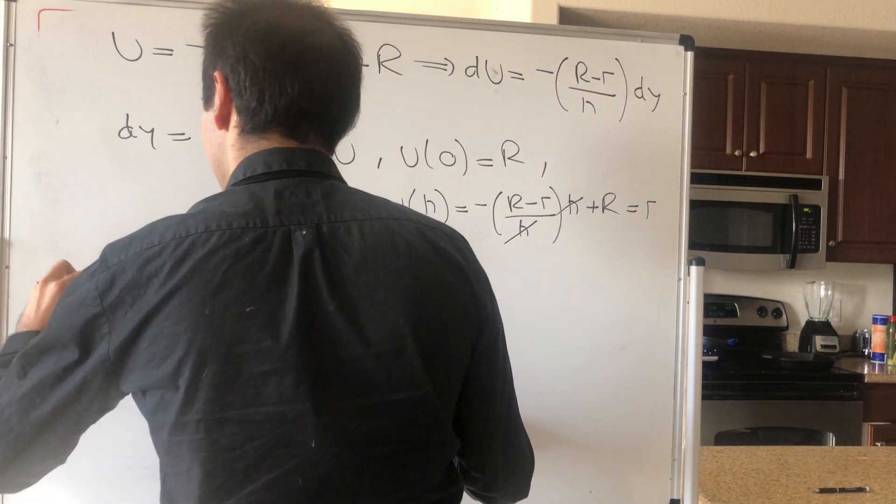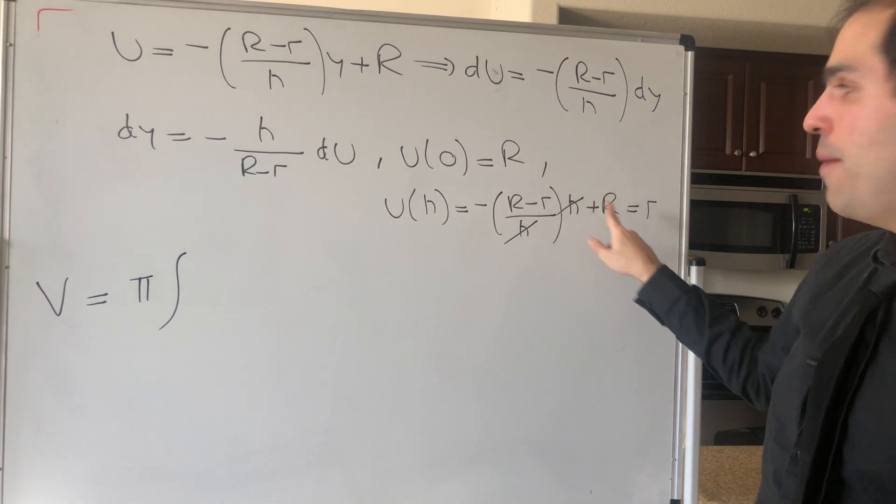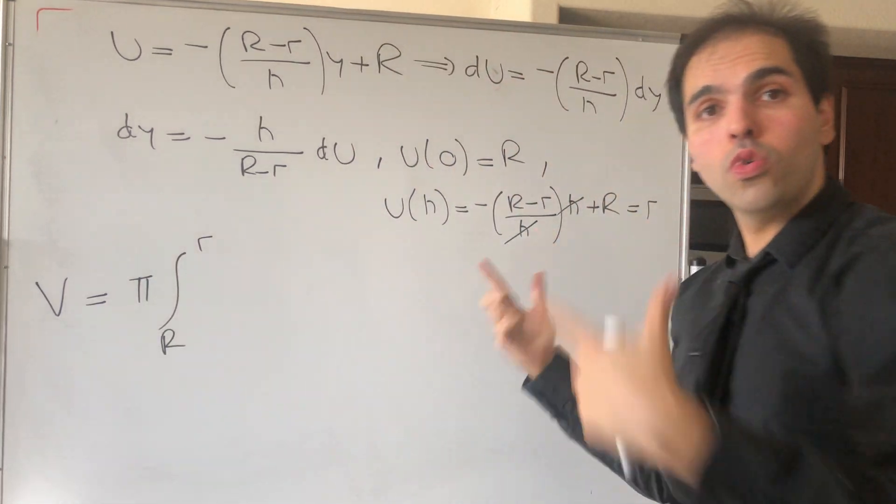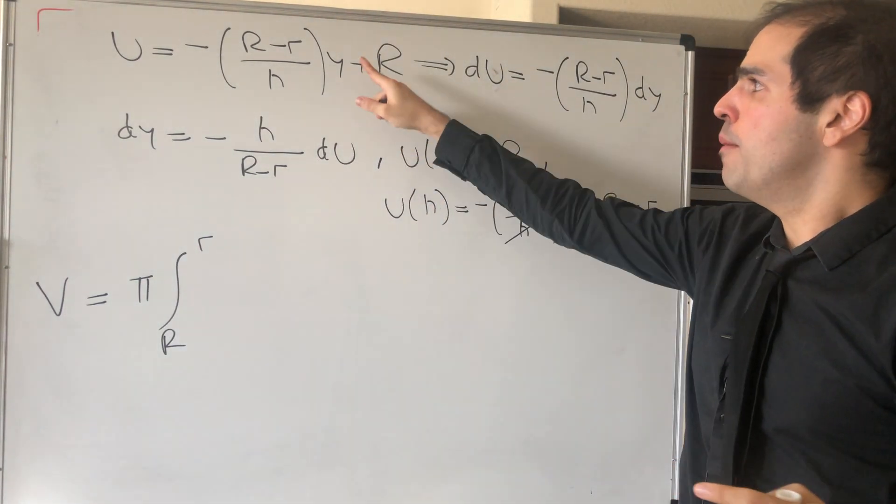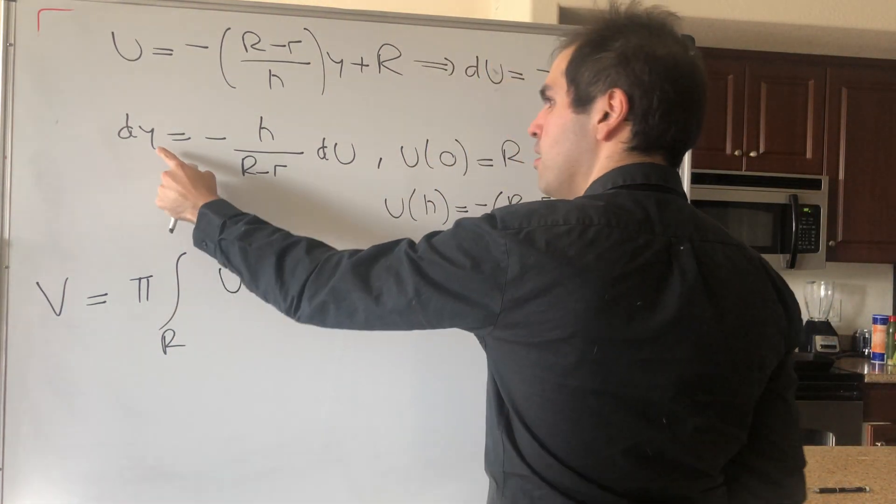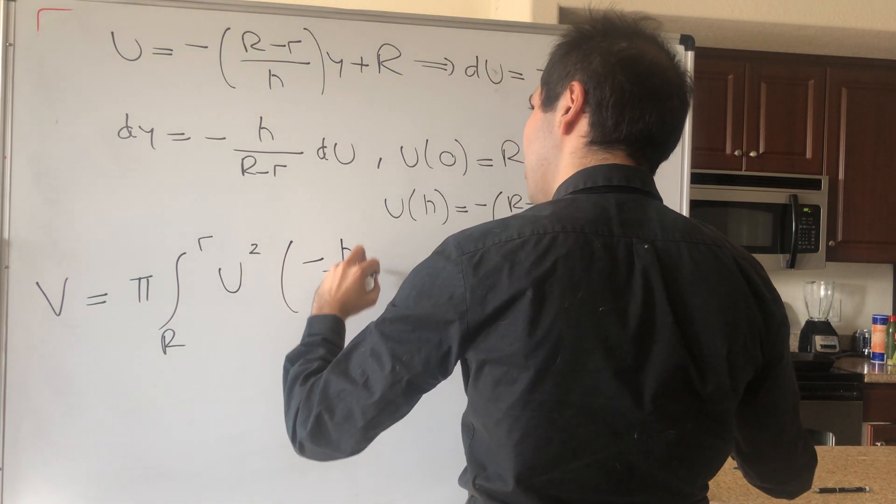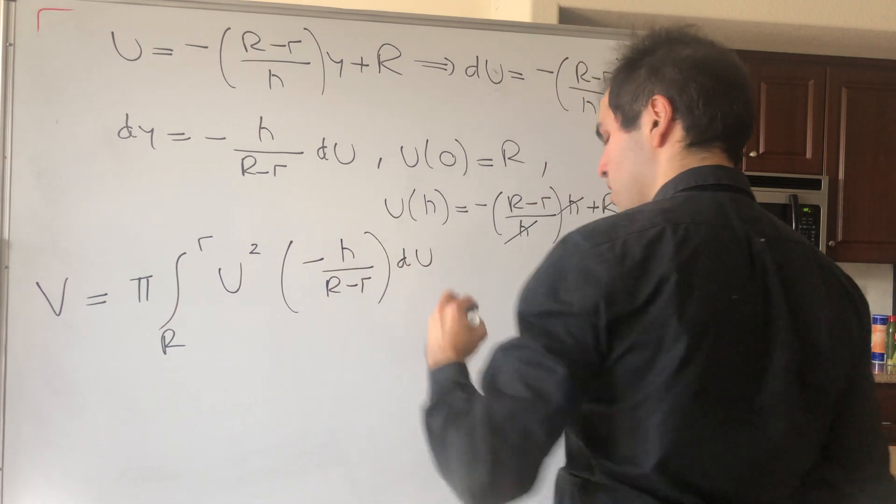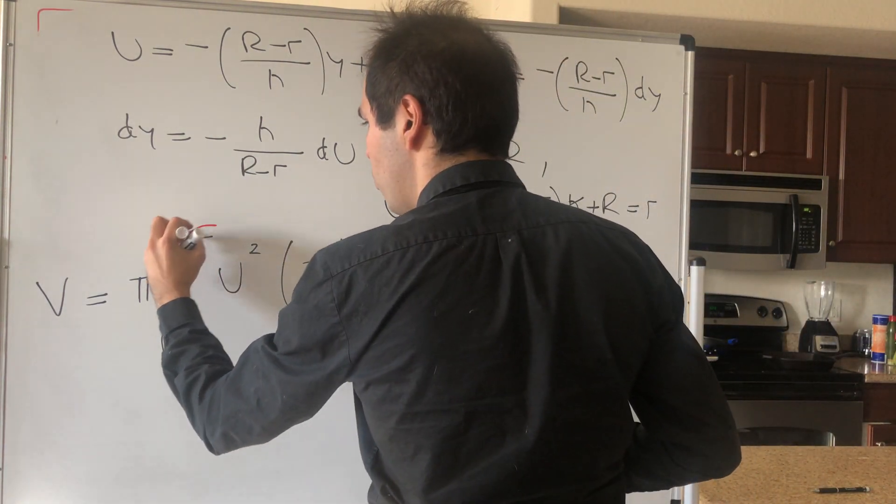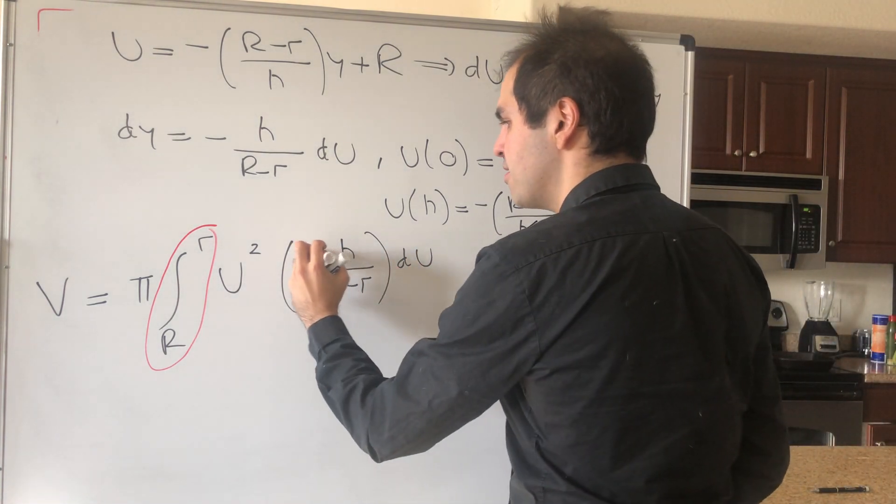So the volume is pi times the integral over the new endpoints, so capital R to little r. Now we have this whole gibberish with the square, but because of our clever substitution, this just becomes u squared. And then our dy, which now is minus h over (R minus r) du. But you might not notice it, but this integral actually goes in the wrong order. It's integral from a big number to a small number. So to make this correct, we need to cancel this out with the minus.